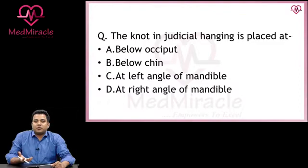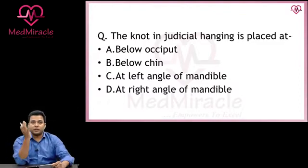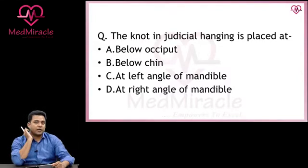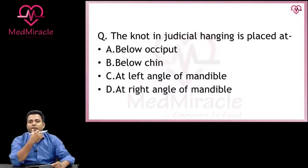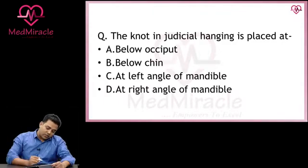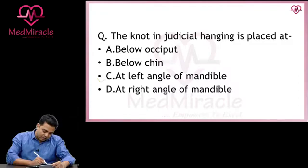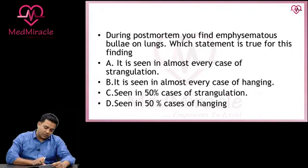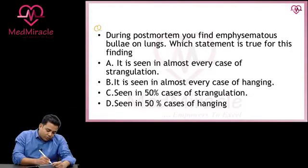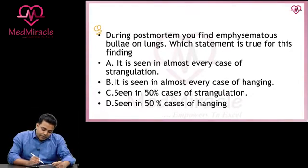Simple question: presence of knot over midline occipital region — the hanging is called typical hanging. Anywhere other than midline occipital, the hanging is classified as atypical hanging. This is classification of hanging based on types of knot. The third type is judicial hanging — in judicial hanging the knot is placed at the left angle of mandible. That is the correct answer.